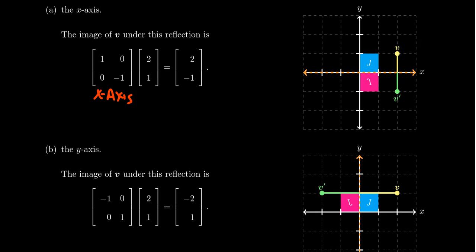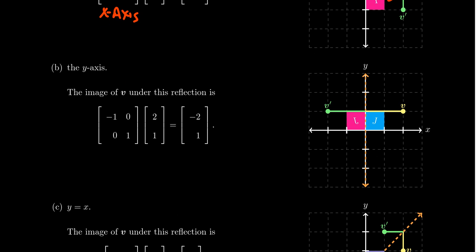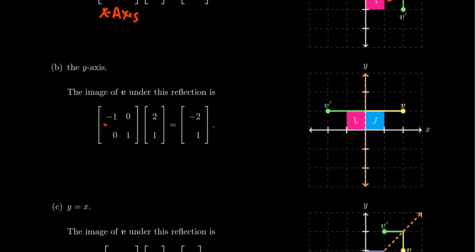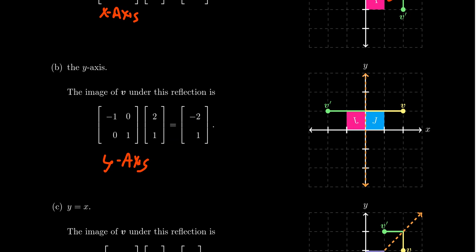Applied to the unit square, reflection across the x-axis flips it downward. For reflection across the y-axis, we multiply by [-1, 0; 0, 1]: the first row gives -2, the second row gives 1, so the x-coordinate changes but the y-coordinate doesn't. Reflecting across the y-axis is a horizontal transformation — the x-coordinate changes, the y-coordinate stays. The unit square reflects to the left.